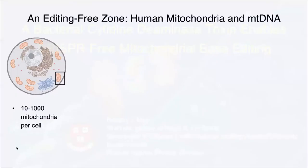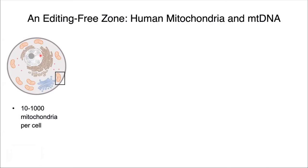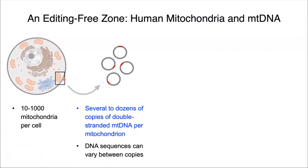Precise genome editing of cells and nuclear DNA can alter the biology of a given animal. One organelle that has remained outside the reach of precision genome editing is the mitochondria. Each of your cells contains hundreds of mitochondria, with each organelle containing several to dozens of copies of your double-stranded mitochondrial DNA. These DNA sequences within the mitochondrial DNA can vary between copies to give rise to a phenomenon known as heteroplasmy.